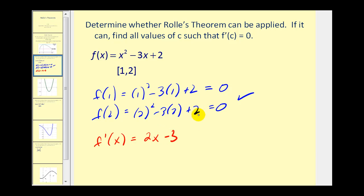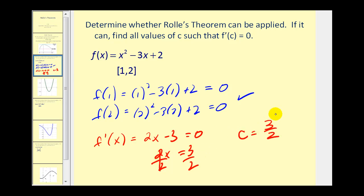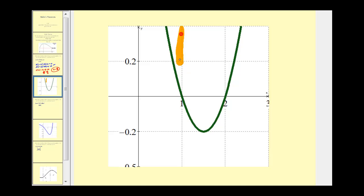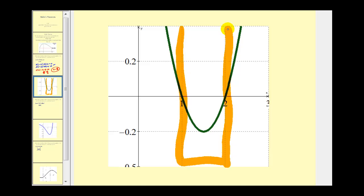We want to know when two x minus three equals zero, so we solve for x. Add three to both sides and divide by two — so x equals three halves. Therefore c is equal to three halves, meaning if x equals three halves, we should have a horizontal tangent line. Here's the interval from one to two: f of one equals f of two, it's continuous and differentiable, and at x equals one point five we have a horizontal tangent line, so the derivative equals zero.